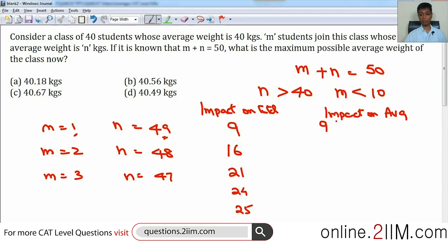The total has shot up by 9 over how many people? We originally had 40, now we have one more student coming in—there will be 41 students in this class. So this will be 9 by 41—the impact on average.